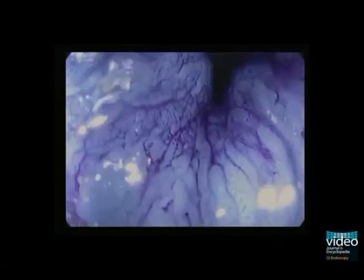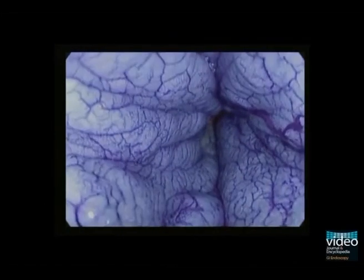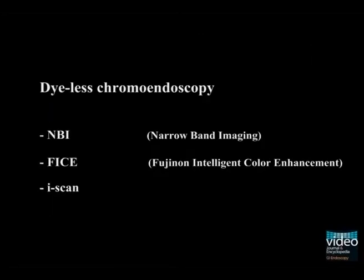Recent evidence in endoscopic imaging has led to the development of so-called dye-less chromoendoscopy techniques. These include narrowband imaging, Fujinon intelligent color enhancement, and eye scan. Potential advantages include easy usage by just pushing a button on the handle of the endoscope and homogeneous coloration of the surface. Early data suggests that dye-less chromoendoscopy could yield similar detection rates of dysplasia in ulcerative colitis, like dye-based techniques.